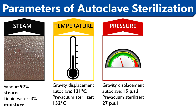Temperature and pressure are the other two parameters of an autoclave. Generally an autoclave uses dry saturated steam under elevated temperature and pressure to ensure potential microbicidal activity. A gravity displacement autoclave is operated under 15 psi pressure and 121 degree Celsius temperature, whereas a pre-vacuum sterilizer is operated under 27 psi pressure and 132 degree Celsius temperature. Here psi is the unit of pressure, i.e. pounds per square inch. If pressure within the vessel is increased above the atmospheric pressure, it will also increase the boiling temperature of water within the pressure vessel, and this increase in boiling temperature will convert water into steam.